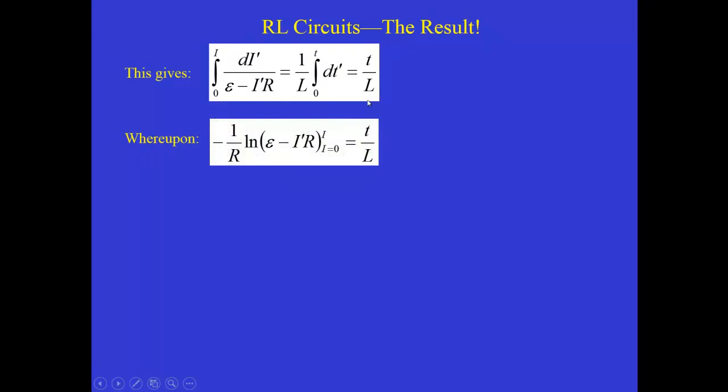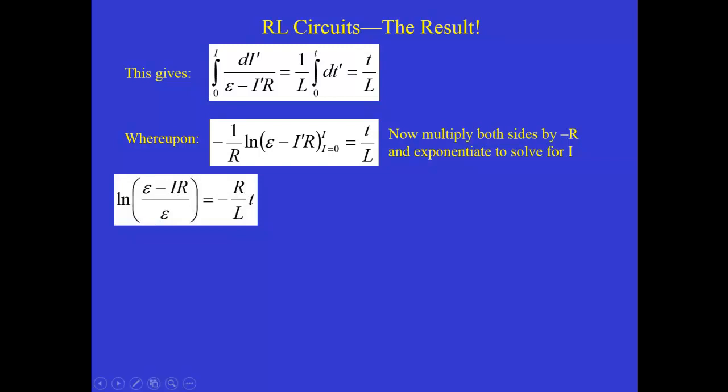The left hand side gives us a natural log. And there's a minus one over R out there that multiplies the natural log term. We have to evaluate this between i equals zero and i. So when we do that, we get the log of epsilon minus iR, which is what you have for the upper limit, and then log of epsilon for the lower limit. And since those are subtracted, you can write this as the log of that quotient.